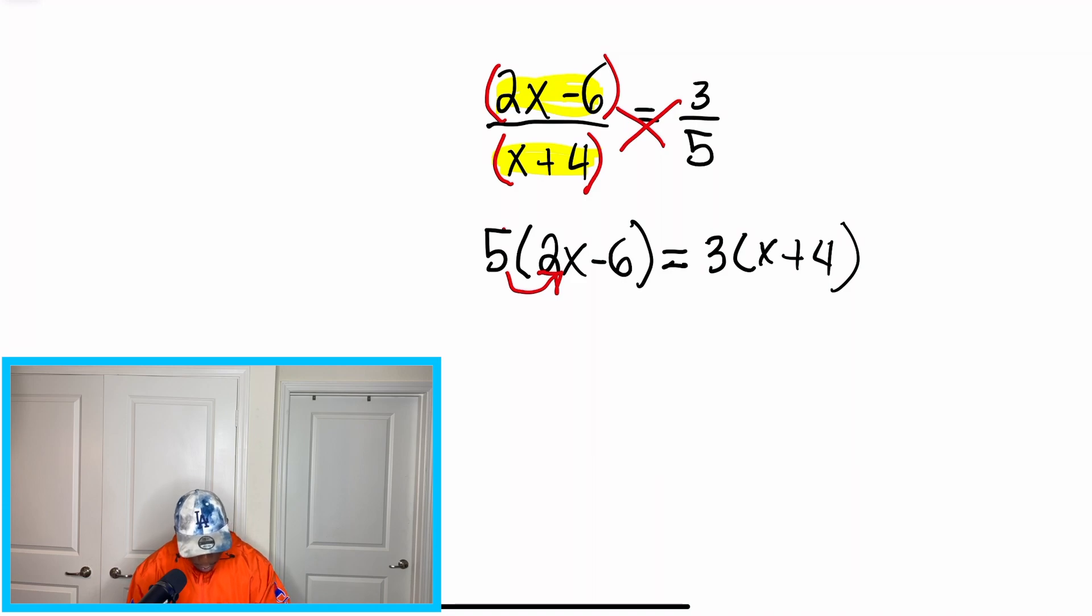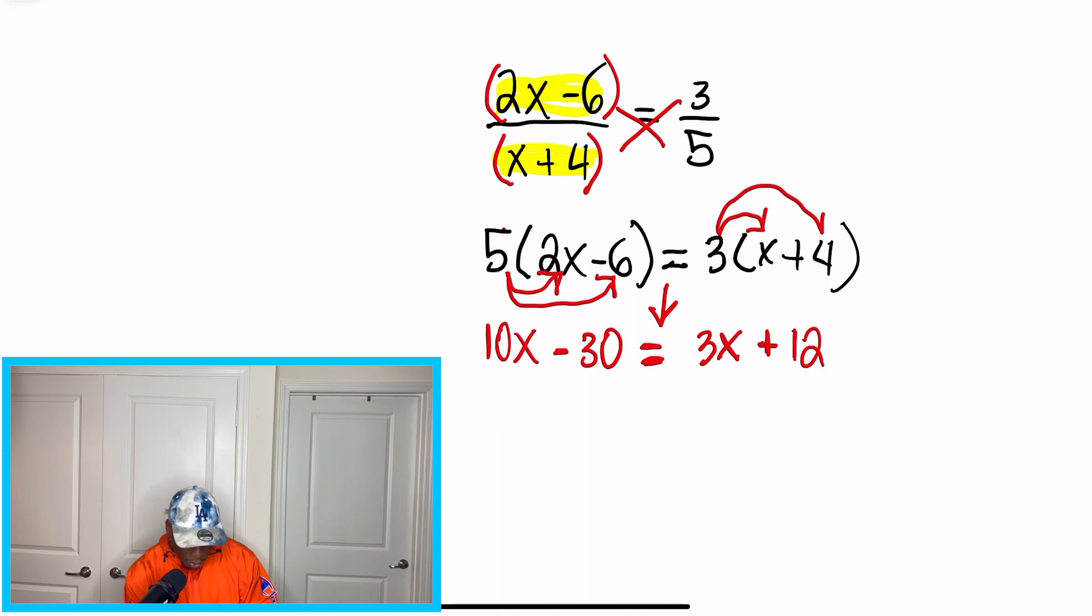When I look here, when we multiply, we have 5 times 2x. So we have an answer of 10x, and then we go back again and multiply to get negative 30, because that negative sign in front of 6 lets us know it's negative. And then, we'll drop our equal sign, bring it down, and then we're going to go ahead and multiply on the other side as well. And after I multiply 3 and x, I have my answer of 3x, and then plus 12 once we multiply 3 and 4.